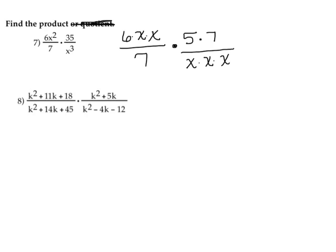Now I'm going to see what I can eliminate — what I can cross out. Right off the bat I can get rid of an x, an x, and an x. There's a 5 with nothing to match up with, but the 7 does have something to match — a 7 in the numerator and a 7 in the denominator.